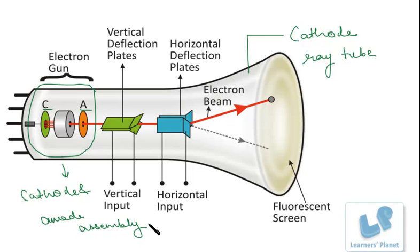And at its narrow end it contains an anode and cathode assembly. Now the cathode here emit electrons. They emit electrons. And the anodes draw the electrons away from the cathodes.